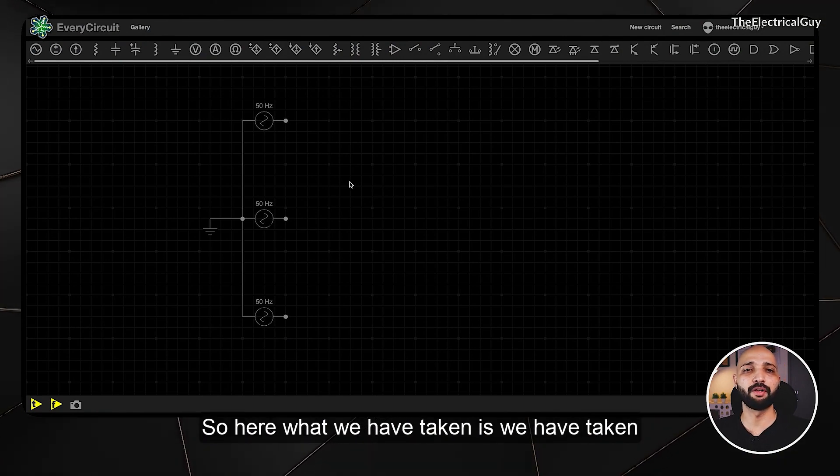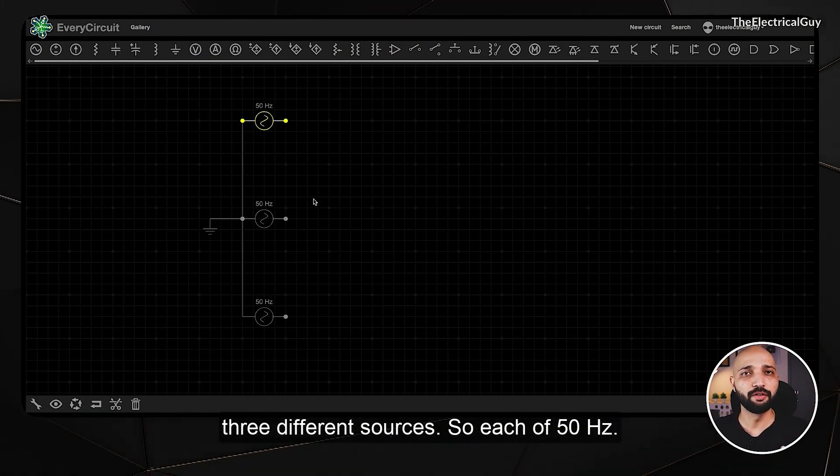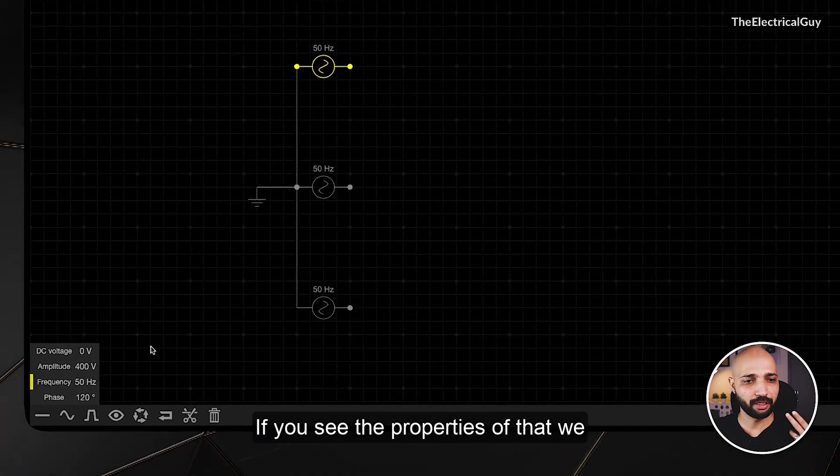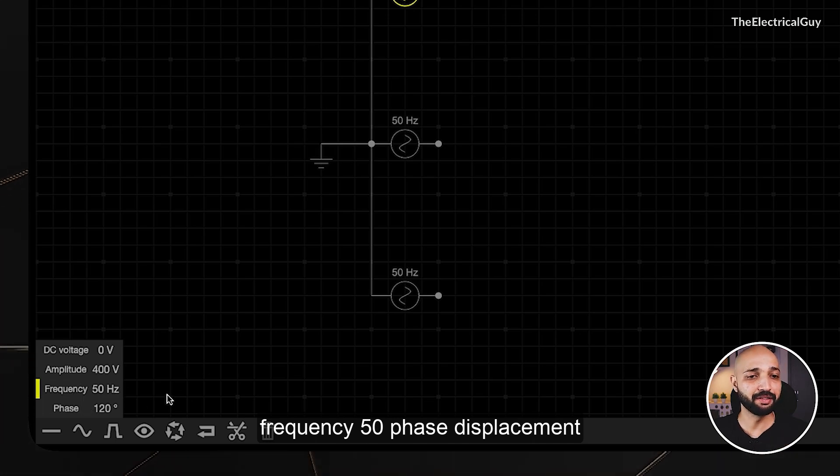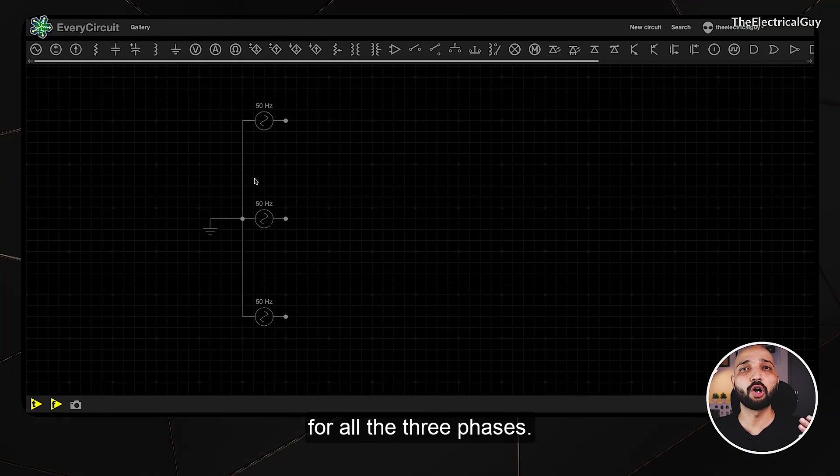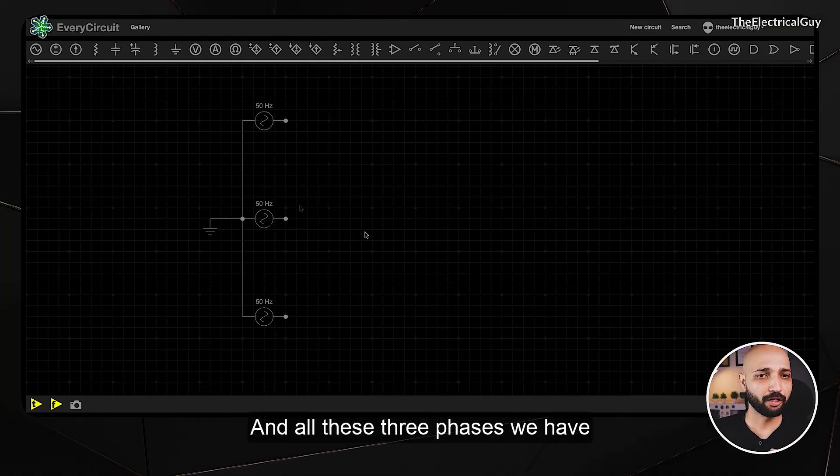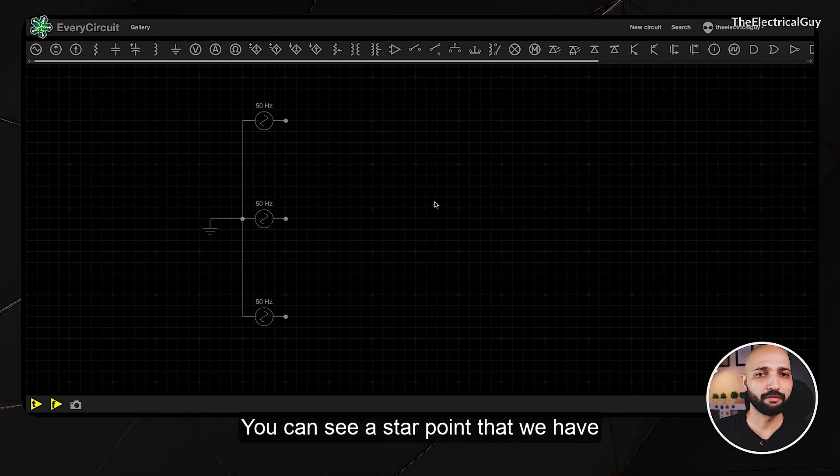Here what we have taken is three different sources, each of 50 Hertz. The amplitude is 400 volts, frequency 50 Hertz, and the phase displacement is 120 degrees. The same properties are applied for all three phases and all these three phases we have connected in a star manner. You can see a star point that we have connected.